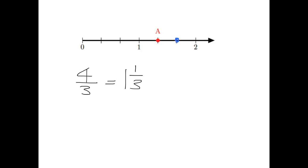Now let's put a point at B. We can see that as being one and two-thirds, right? So at point B we're at one and two-thirds. Let's remind ourselves how we turn that back into an improper fraction. What we do — if you remember from last year — is we say one, the whole number, times three, because that tells us how many thirds you've got. And then we add on those two extra thirds. So one times three is three, plus two is five. So what we have is five-thirds.